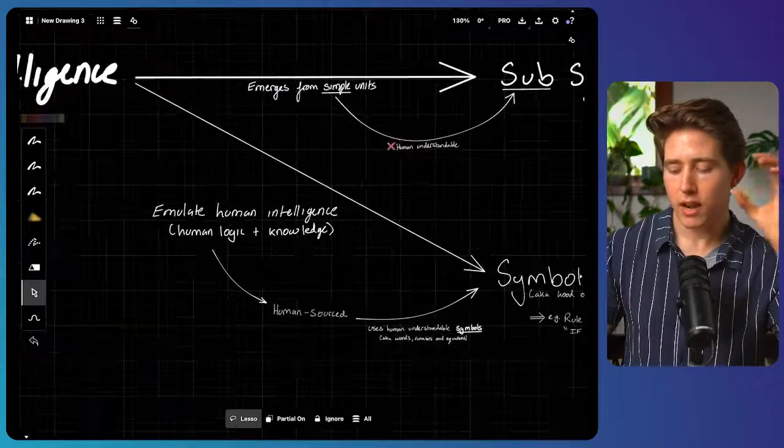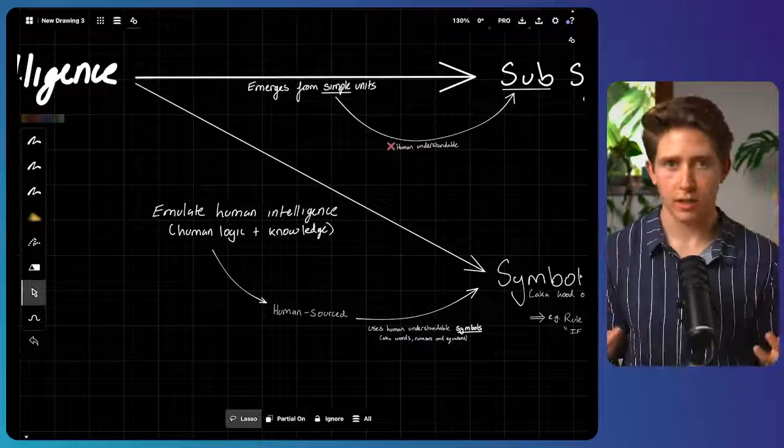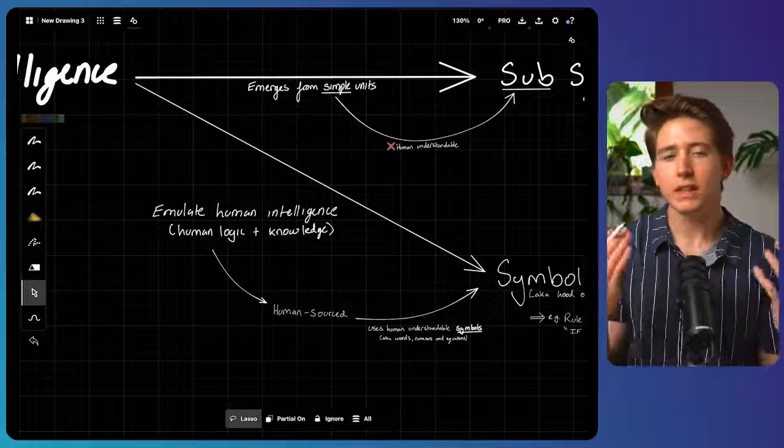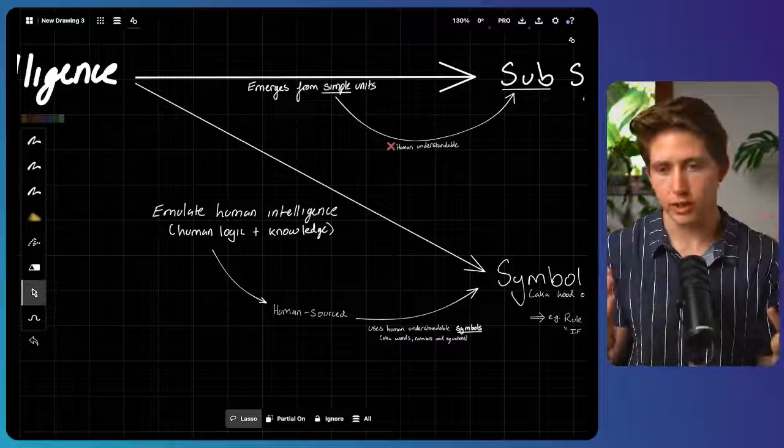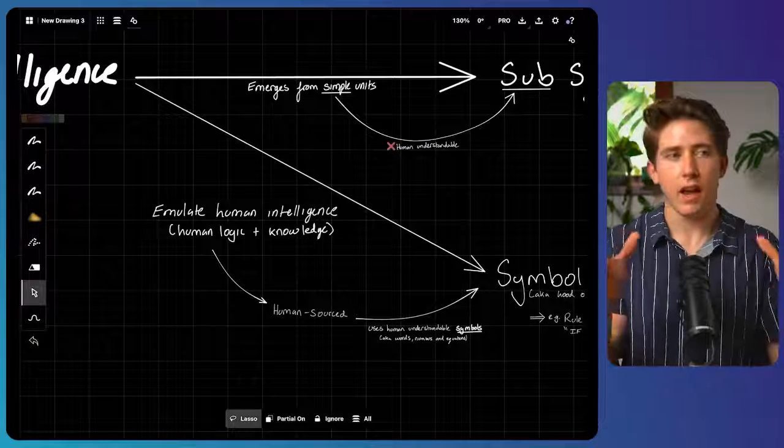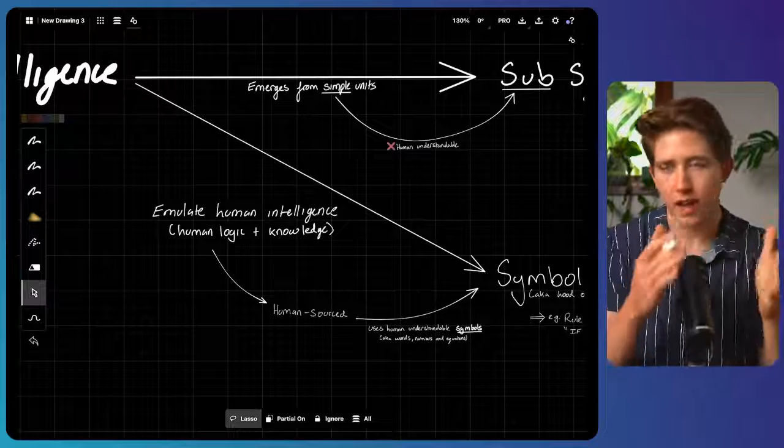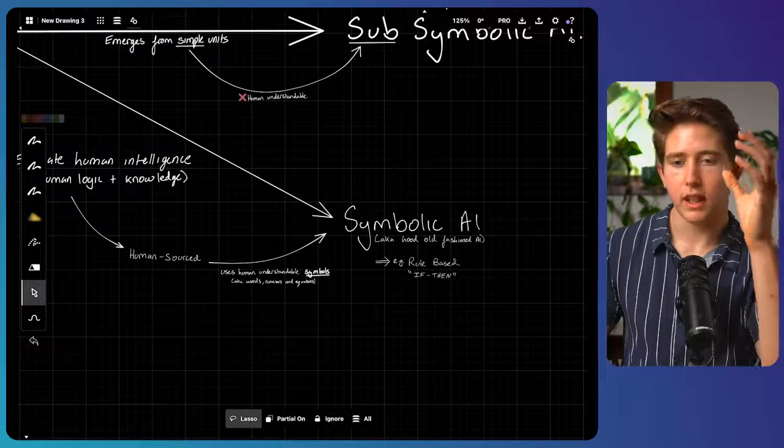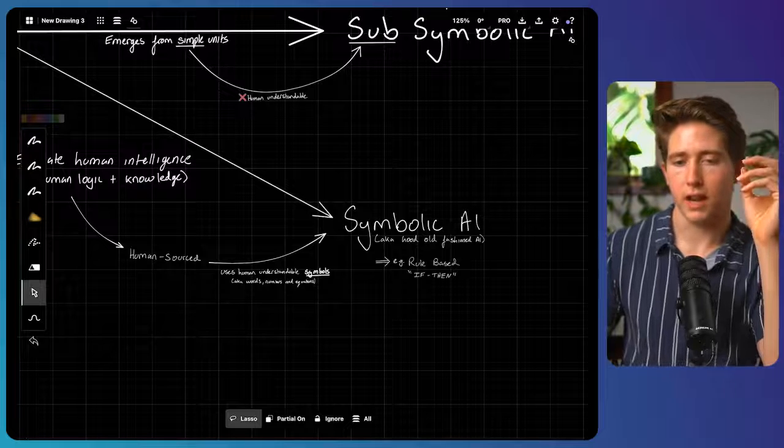We can either try and emulate human intelligence, effectively feed in human logic and knowledge into this machine and instruct the machine on how to use that logic and that knowledge. And this is what we call symbolic AI.